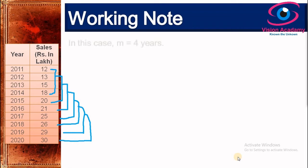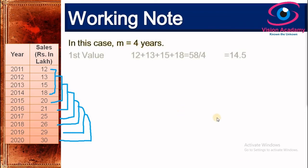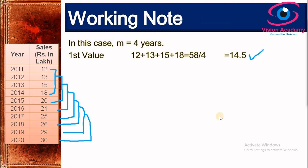In this problem, m equals 4 years, meaning a four years simple moving average. For the first value, we take 12, 13, 15, and 18, which sum to 58. Dividing by 4 gives the first moving average value of 14.5.